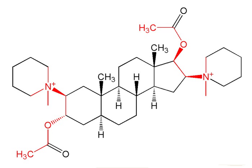Following depolarization, the acetylcholine molecules are then removed from the end plate region and enzymatically hydrolyzed by acetylcholinesterase. Normal end plate function can be blocked by two mechanisms. Nondepolarizing agents, such as tubocurarine, block the agonist acetylcholine from binding to nicotinic receptors and activating them, thereby preventing depolarization.